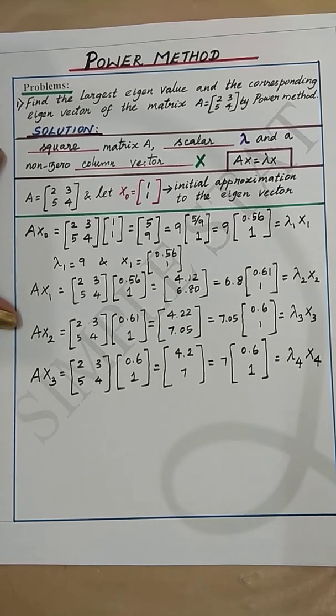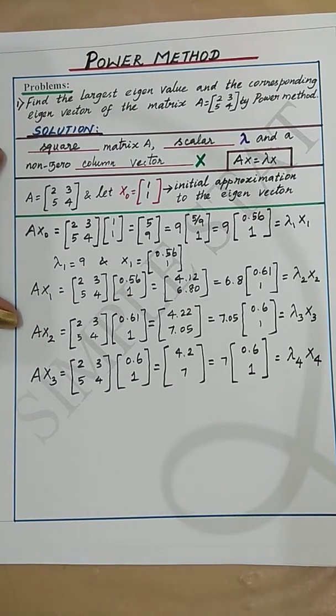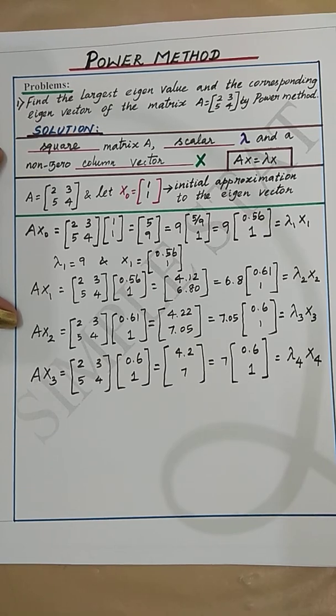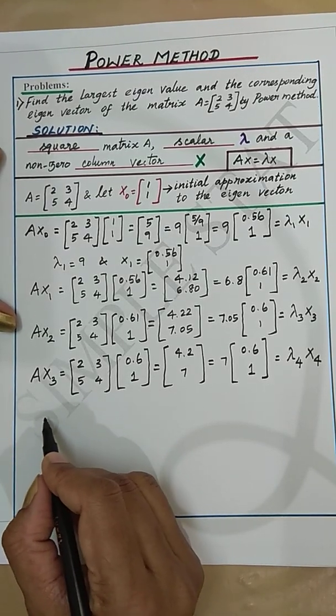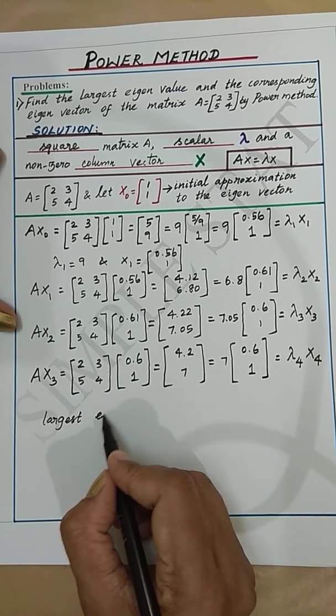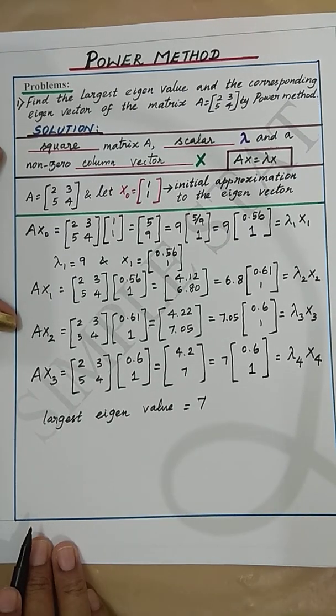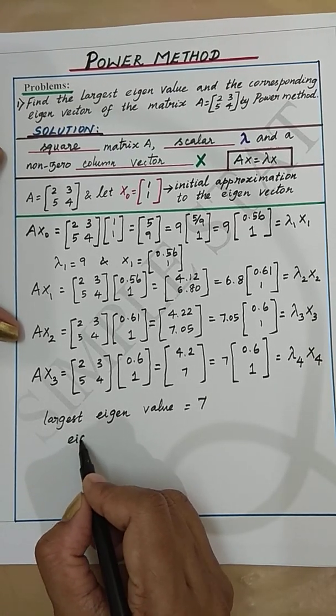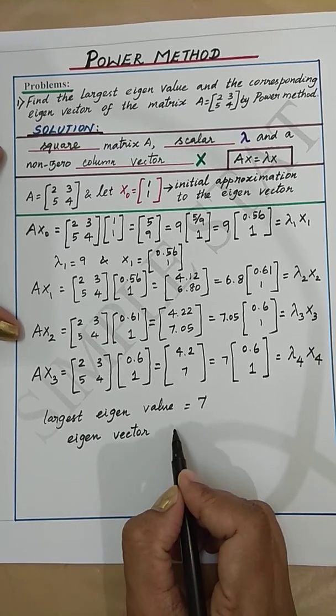Now we observe that the values of lambda 3 and lambda 4, and also X3 and X4 are same. Therefore, we can stop the iteration process and conclude that the largest eigenvalue is 7 and the corresponding eigenvector is [0.6; 1].